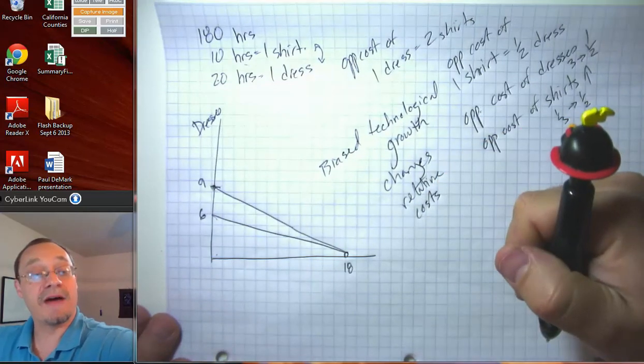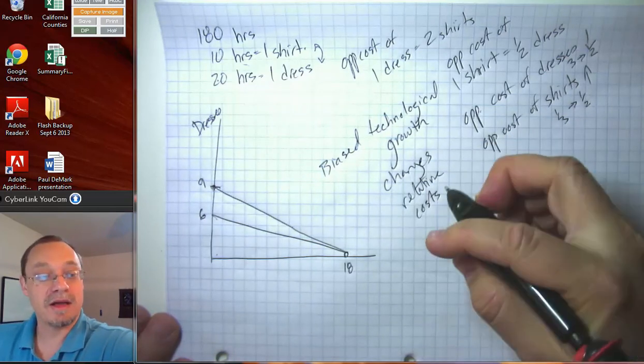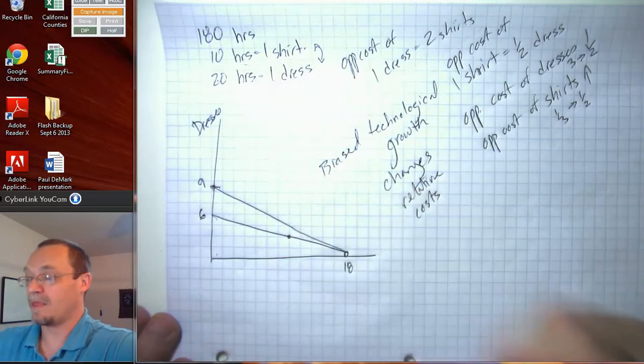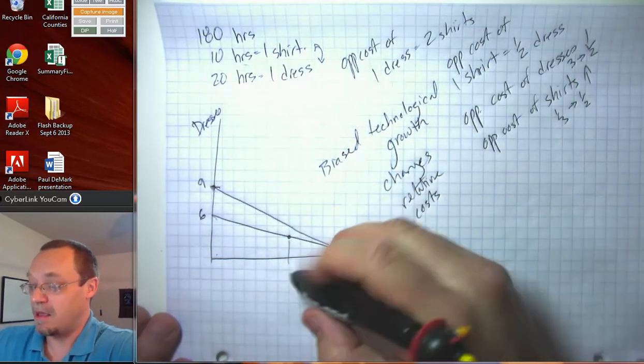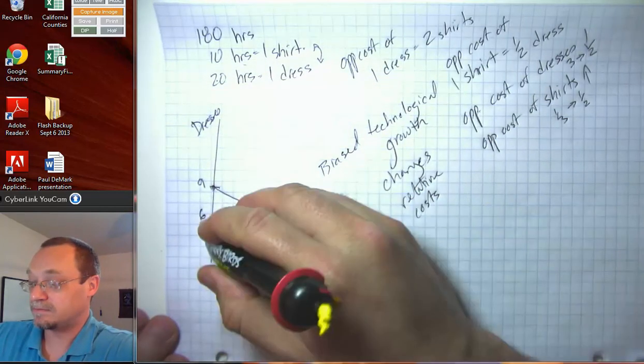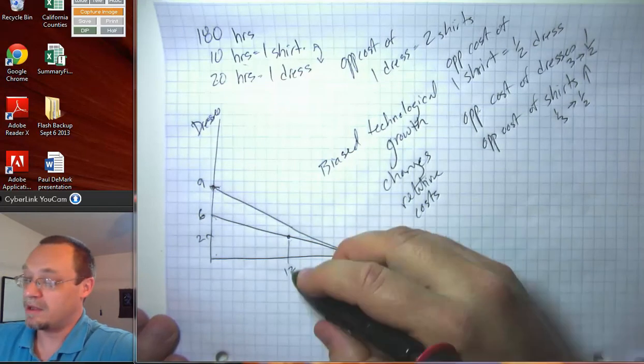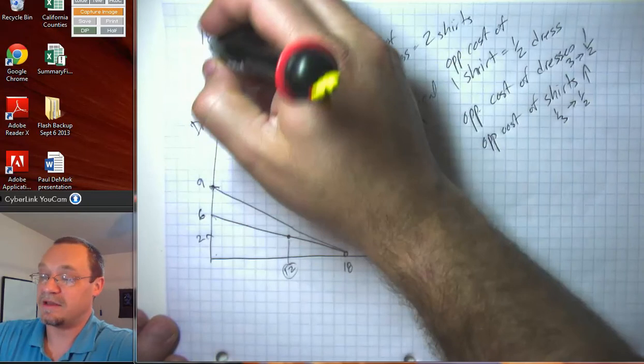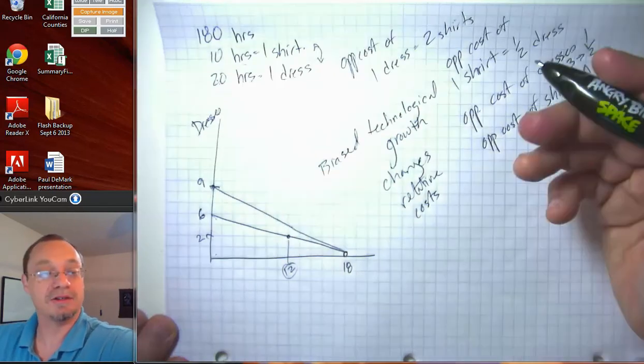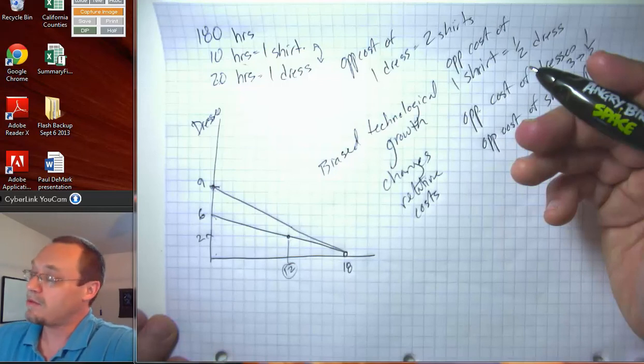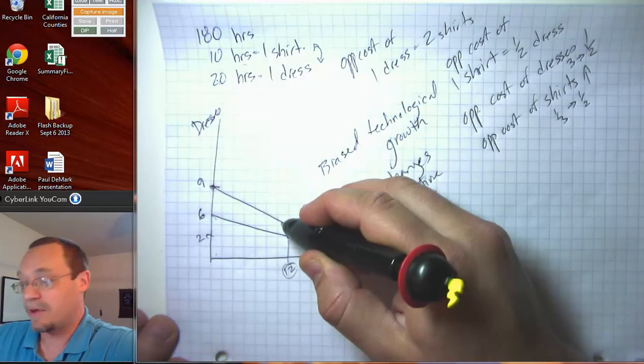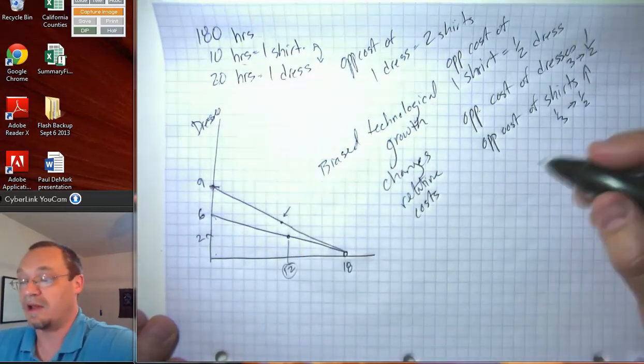And all else equal, that would tend to make us want to have more or produce more of the thing that is now comparatively cheaper. So, if before we wanted to be at this situation here where we had, say, 12 shirts and if we had 12 shirts, we would have had two dresses under the old system, where this took 120 of our labor hours and it used to be that this was 30 hours per dress. So, we had 60 hours left. Excuse me. And so, that enabled us to produce two dresses left with our 60 hours left. We will probably want to trade off some of our shirts for more dresses.